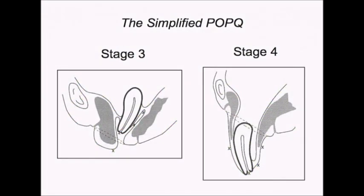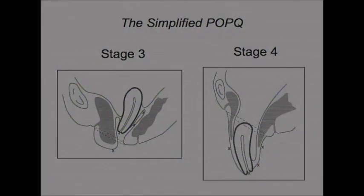This slide represents stage 3 and stage 4 prolapse. In the box on the left, the anterior vaginal wall descends greater than one centimeter past the hymeneal remnants, which is stage 3. The cervix actually descends to within a centimeter of the hymen and is stage 2. The posterior fornix and the posterior vaginal wall are both stage 1. In the example on the right, all four points are stage 4 as this represents complete uterine procidentia.